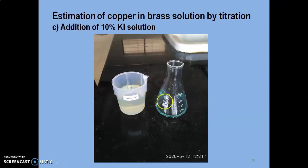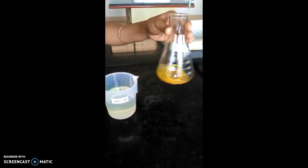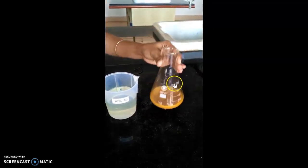Potassium iodide is added to the solution. 5 cm3 of potassium iodide solution is added that will impart the yellowish-brown color to the solution.